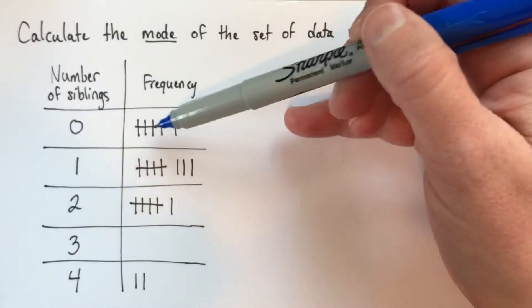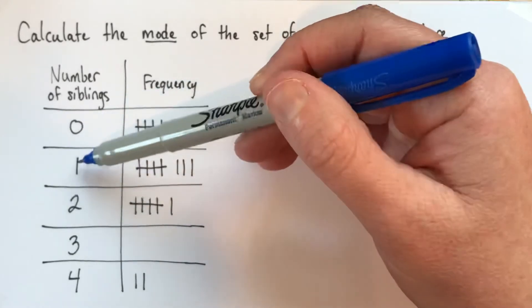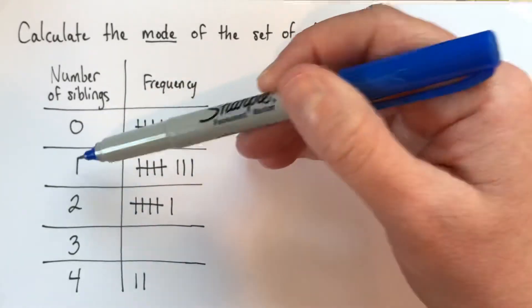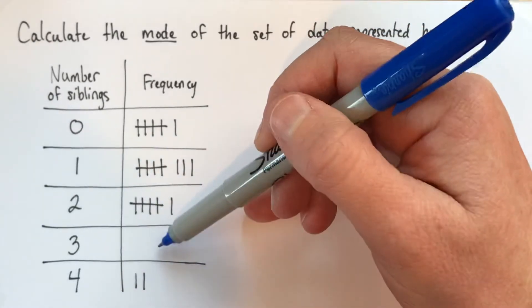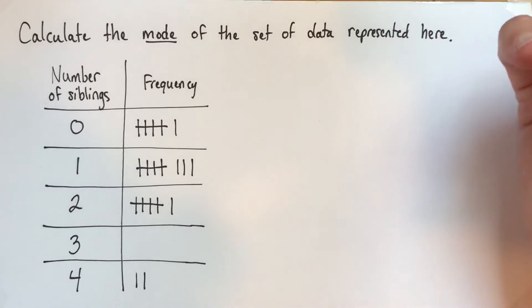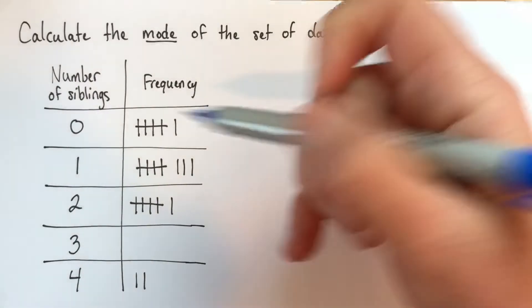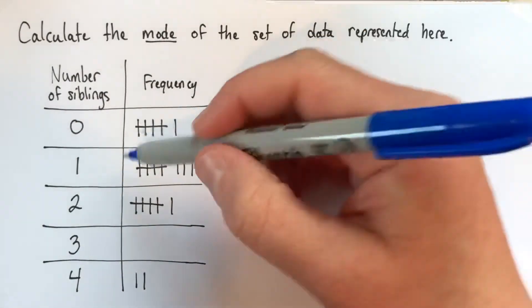What we have here is 6 people who said they have 0 siblings, 8 people who said they have 1 sibling, 6 people who said they had 2, 0 who said they had 3, and 2 who said they had 4 siblings. So the most common number of siblings, the most common value in our original data set, is 1.